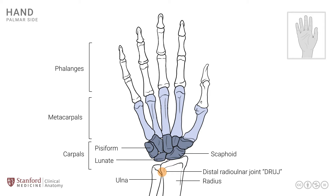The phalanges are many. They are divided or subclassified into proximal phalanges, middle phalanges, and then distal phalanges. Note that the thumb has only two phalanges, named as the proximal and distal phalanges — it does not have a middle phalanx.